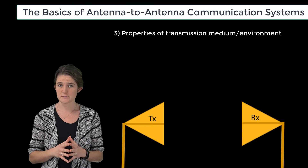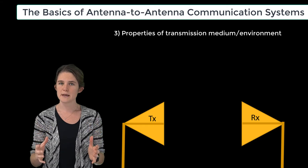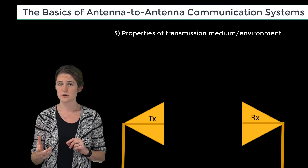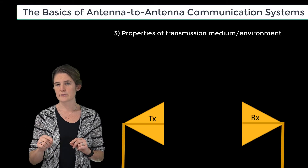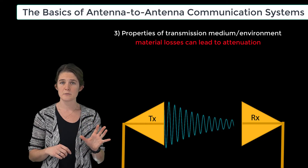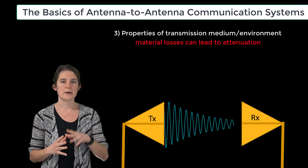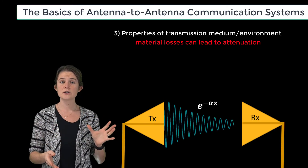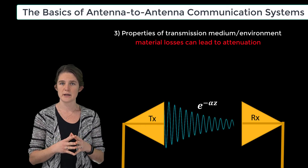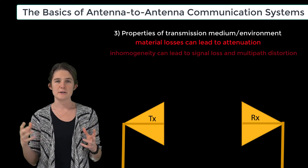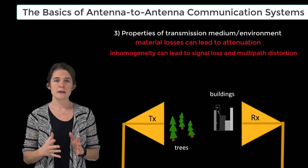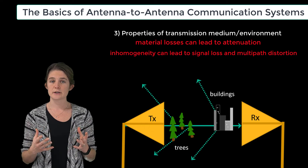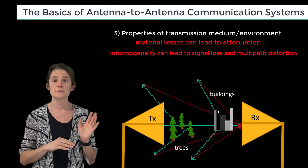The third consideration is the properties of the medium or environment in which the wave is traveling. While path loss is a factor of electrical distance and is not a function of the medium, if the medium is lossy — and any medium with a degree of conductivity will be lossy — the amplitude of the wave will be attenuated by alpha, the attenuation constant of the medium. In addition to path loss, the signal will also experience material loss. Furthermore, any inhomogeneity in the path, including obstacles such as trees or buildings, can cause reflections that reduce the power successfully arriving at the receive antenna.